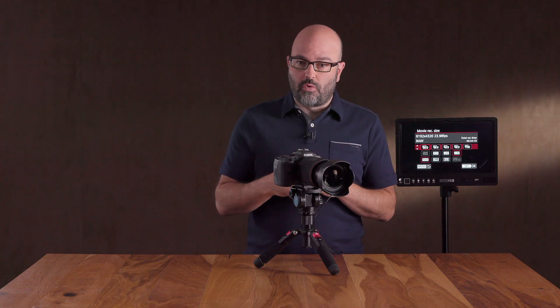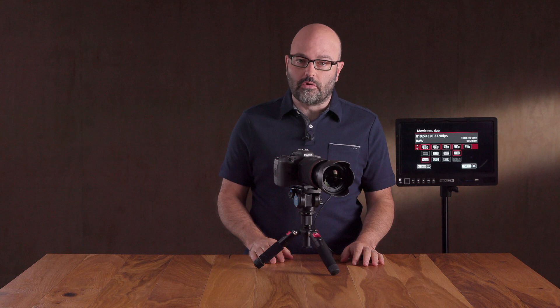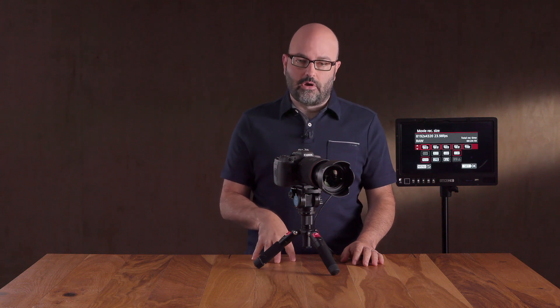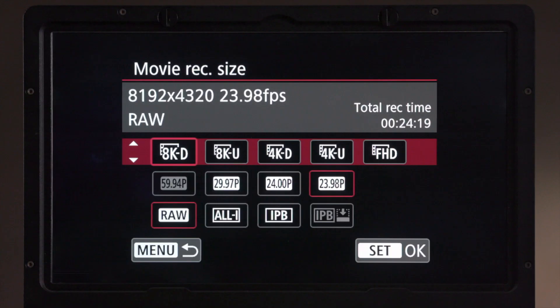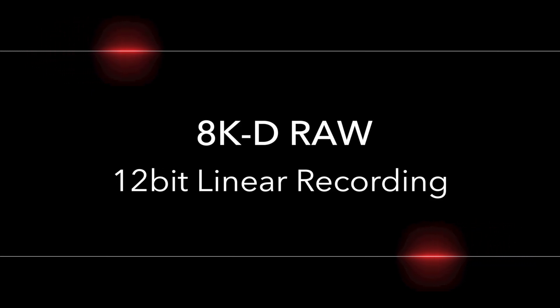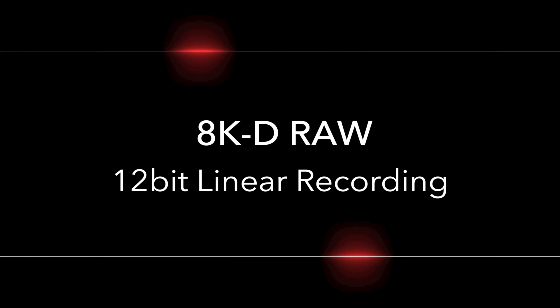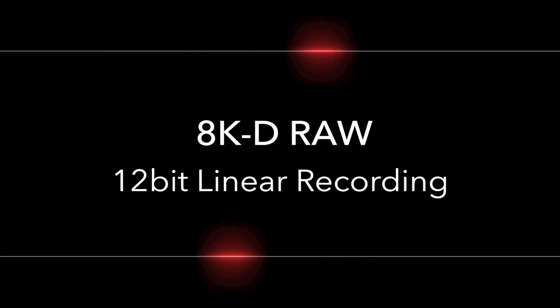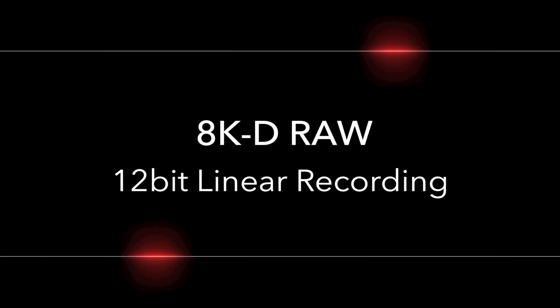That doesn't mean you can record all of that content to the card — it's just total capacity for this resolution, frame rate, and format. You do have to manage the temperature in this camera and you may get less recording time based on your resolution, frame rate, and format. When you're recording in 8KD raw, you should know that's a 12-bit linear recording, so it's going to be the most information you can possibly capture from the R5.